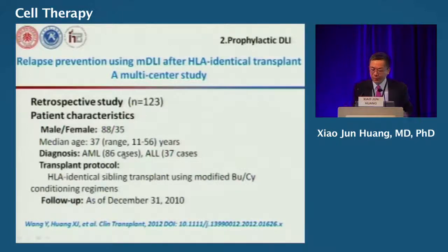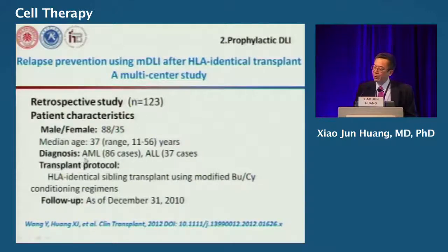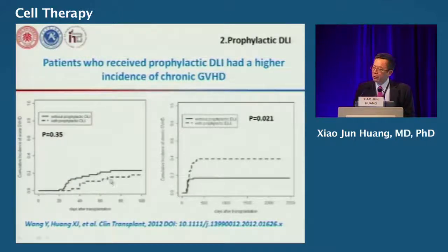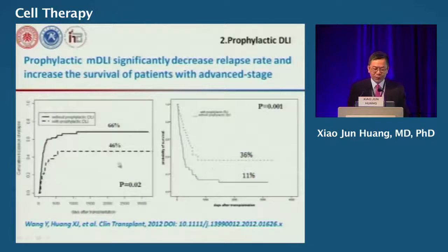Since there was no significant incidence of GVHD, we thought modified DLI could also be used prophylactically. We selected patients who received transplantation in relapsed or refractory status. From retrospective multi-center study data, prophylactic donor lymphocyte infusion showed similar rates of acute GVHD, although chronic GVHD was significantly higher. However, it decreased the relapse rate and increased long-term disease-free survival.